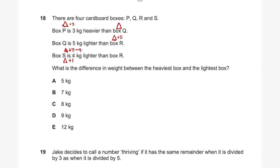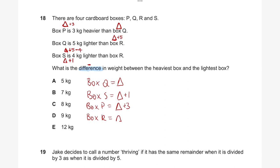Ordering from lightest to heaviest: Q equals triangle; S equals triangle plus 1; P equals triangle plus 3; R equals triangle plus 5. The difference between the lightest (Q) and the heaviest (R) is five kilograms. So the answer to question 18 is A, five kilograms.